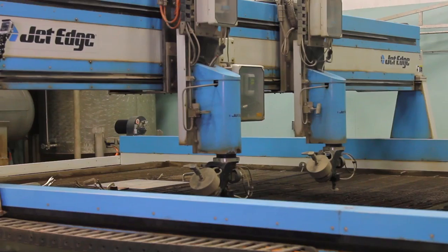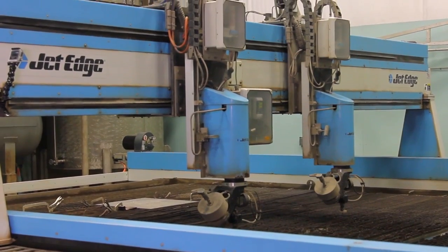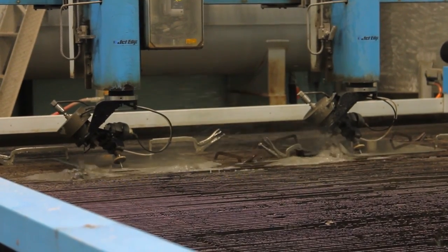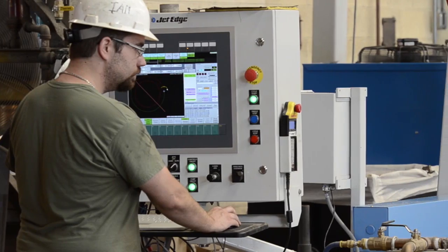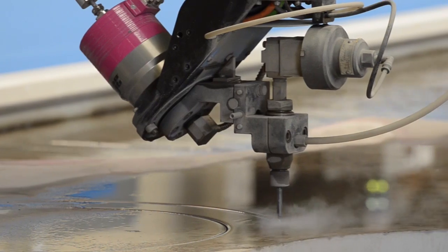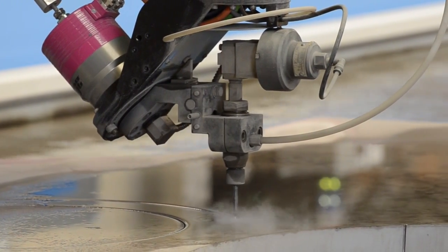The reason why we invested in the dual head 5-axis machine is it gives us the ability to produce a more complete part for our customer. It allows us to do additional processes to their part that we otherwise wouldn't have been able to do.